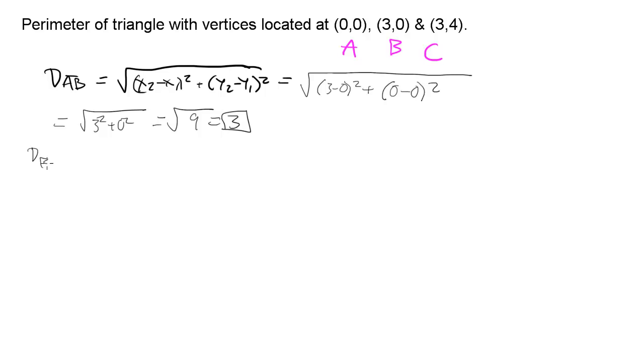Now I'm going to find the distance between B and C. So we do the same thing. So let's assume this is x1, y1, and this is x2, y2. So that's going to be 3 minus 3 squared plus 4 minus 0 squared. So that's going to be the square root of 0 squared plus 4 squared, which is going to be the square root of 16, which is 4.